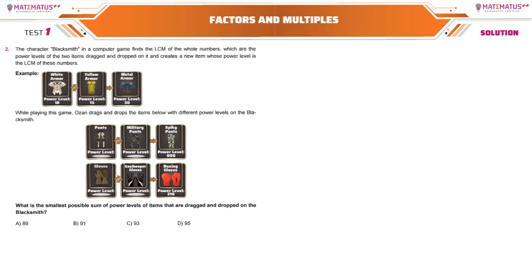Hello friends, we have a computer game problem. As we can see in the example, the third power level is the lowest common multiple of the first two power levels. So we have a rule: the lowest common multiple of 10 and 15 is 30.